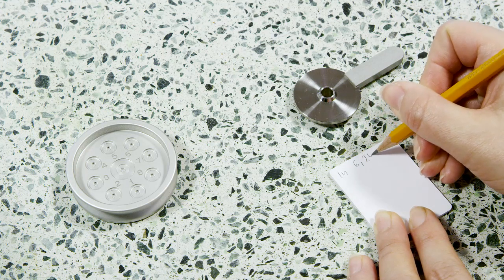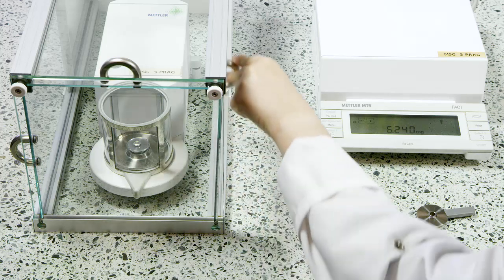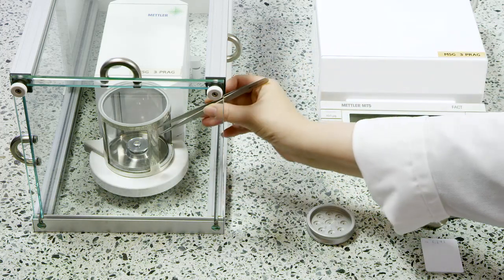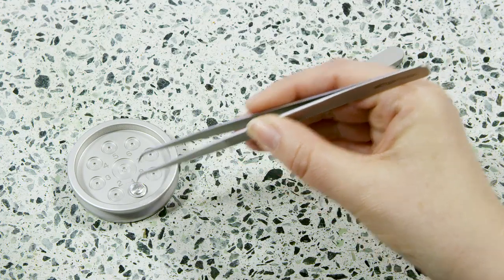If the balance is connected to a PC, the weight can be directly transferred to the experiment window of the STAR-E software with the push of a button. Place the crucible onto the crucible support.